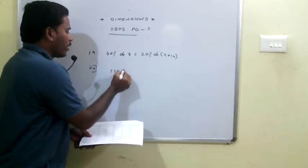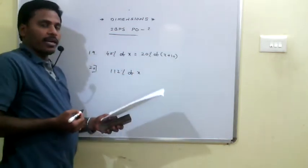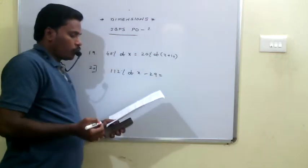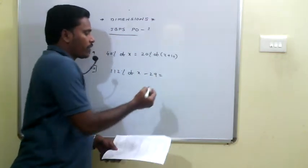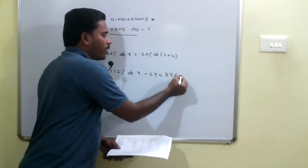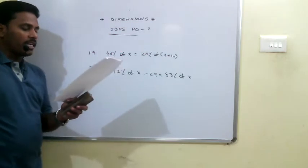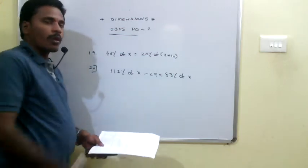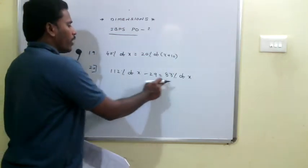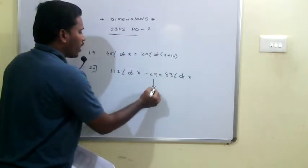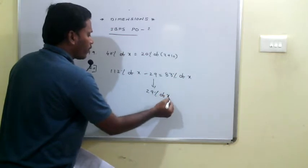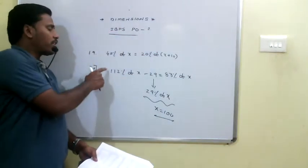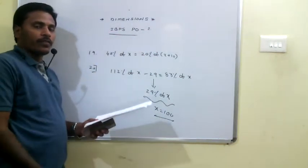Q20: Samantha sells coffee at a profit of 12%, so selling price is 112% of cost price x. If she reduces the price by 29 rupees per kg, it gives a loss of 17%, meaning 83% of x. So 112% of x minus 83% of x = 29% of x = 29, giving x = 100. The initial selling price is 112% of 100, which is 112 rupees.